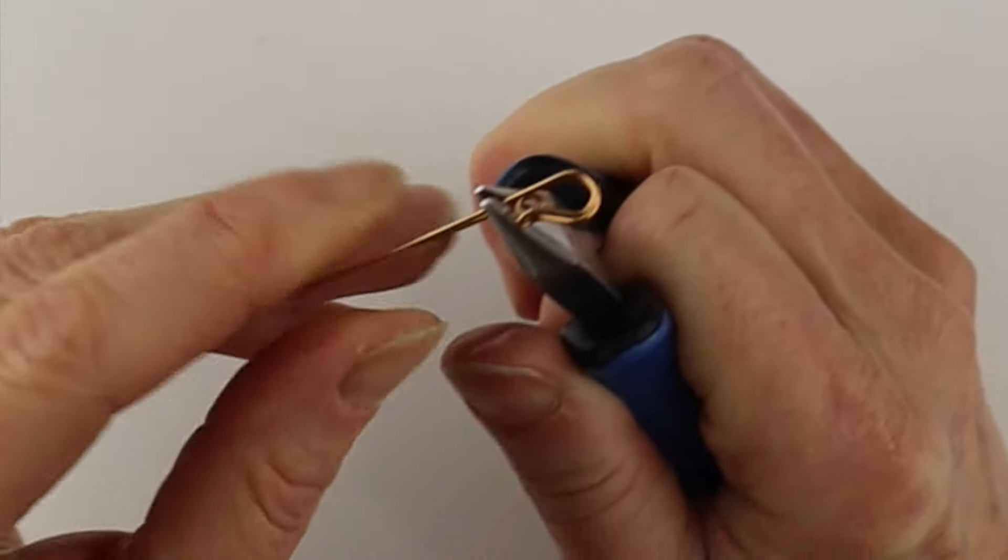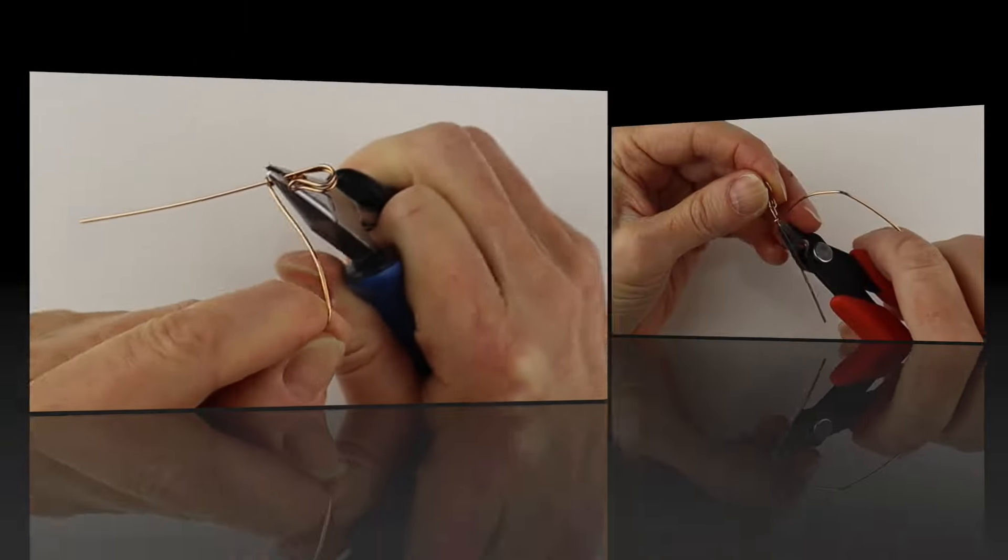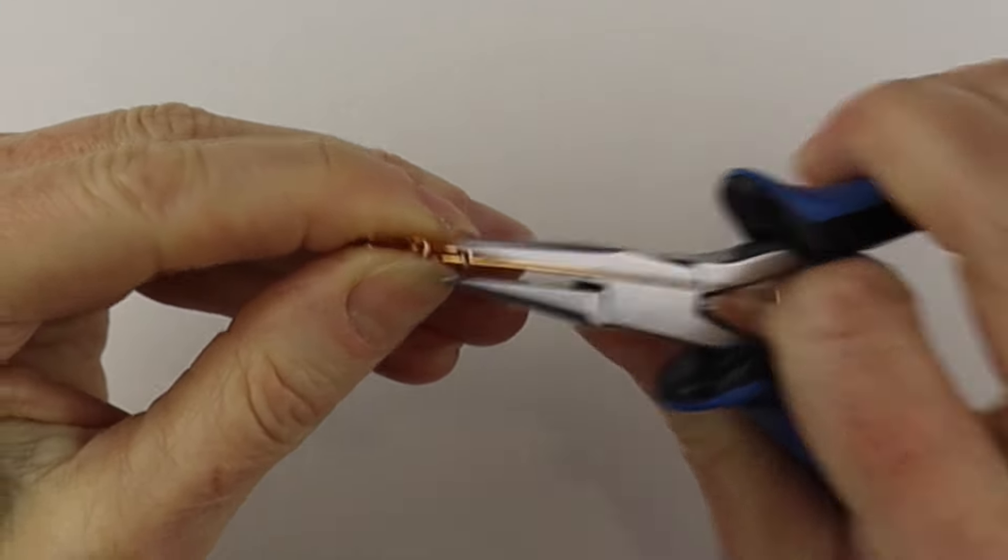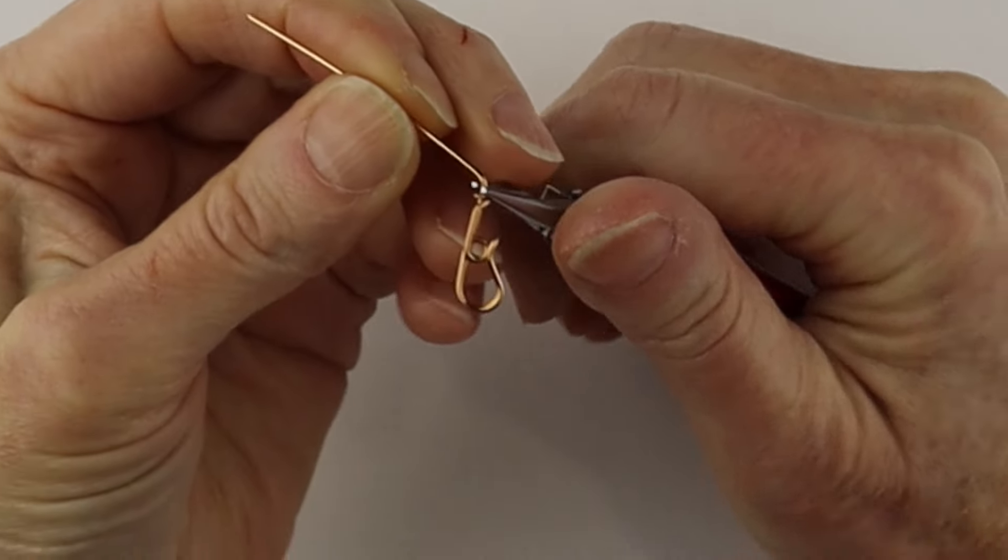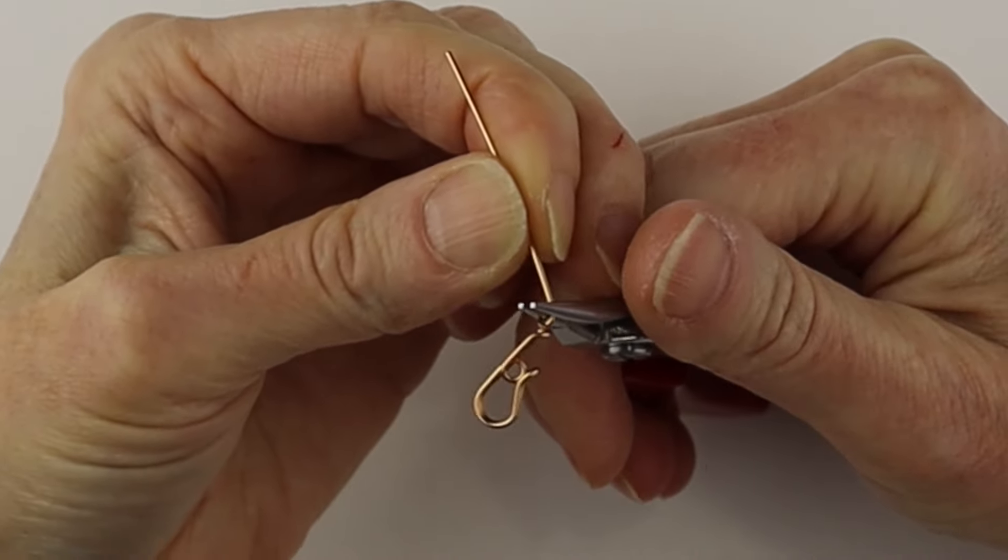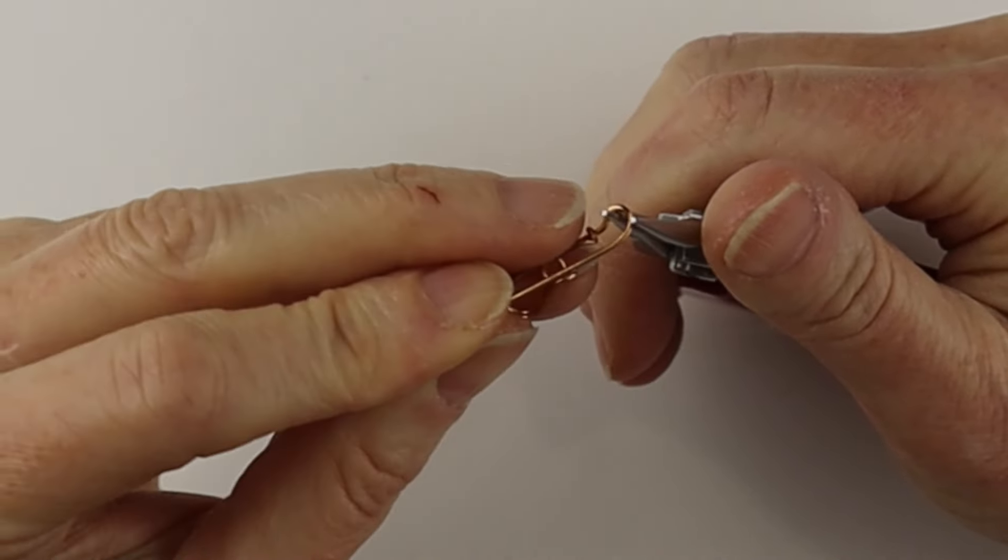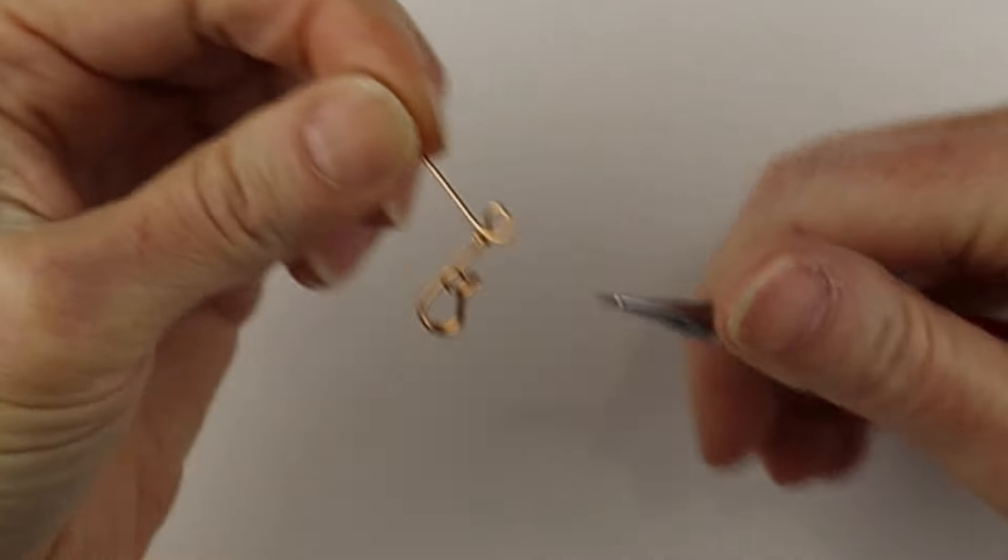Now we're going to hold these two wires with the flat pliers, then this one around and clip it. So then we just have to give that a little pinch. I'm just going to hold it with my round pliers and bend it back.